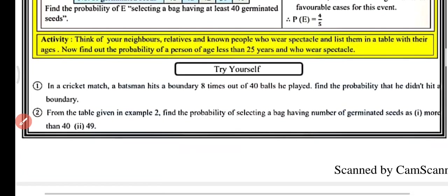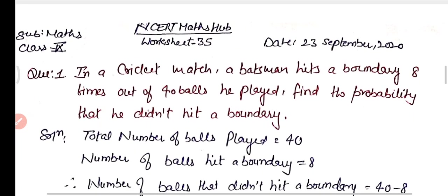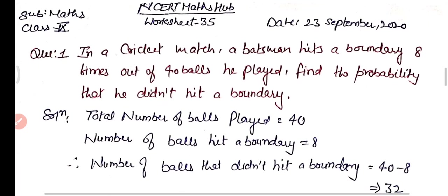Now we have two questions for practice. The first one: in a cricket match, a batsman hits a boundary eight times out of 40 balls he played. Find the probability that he did not hit a boundary.